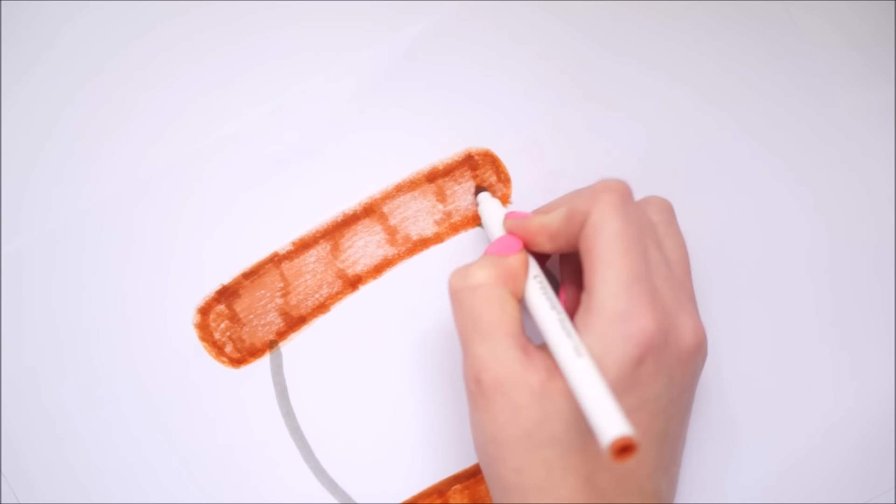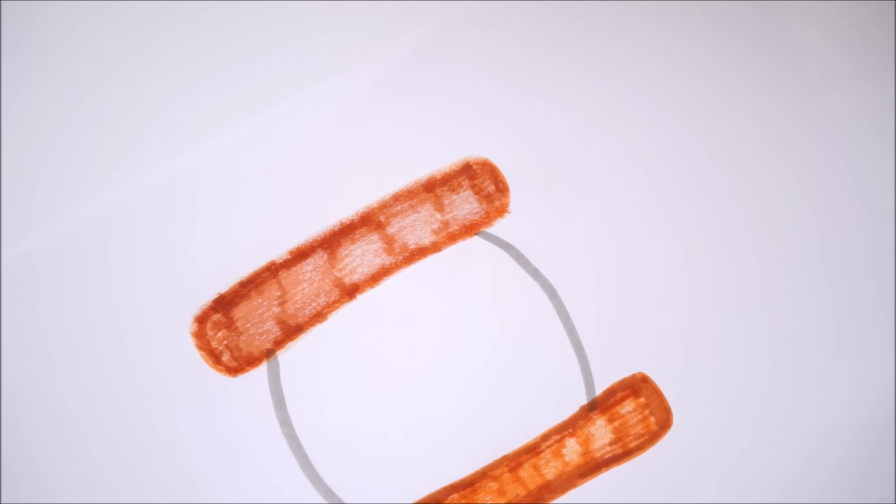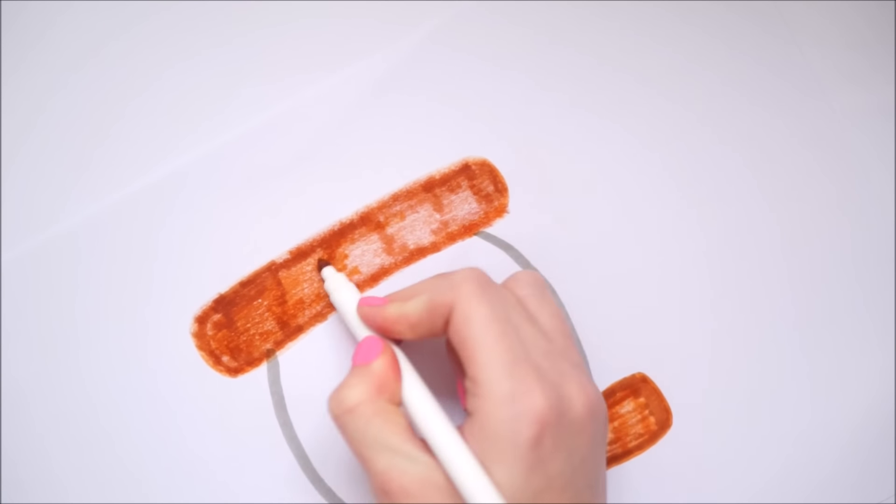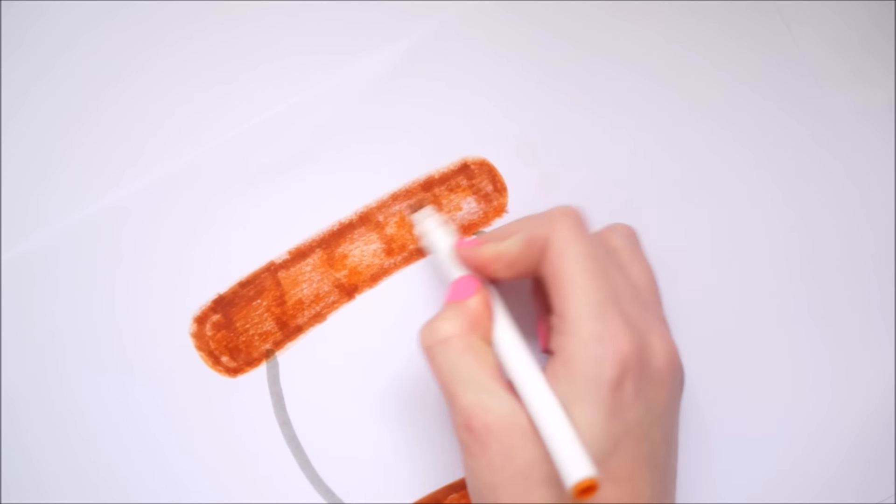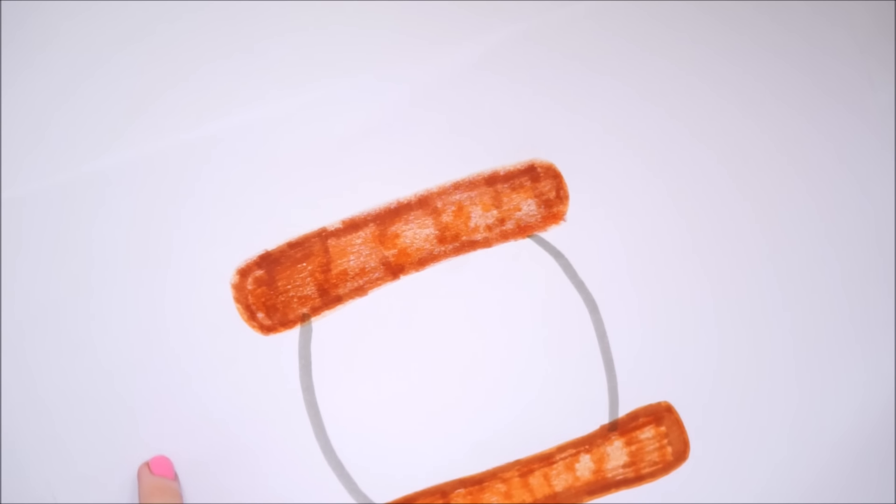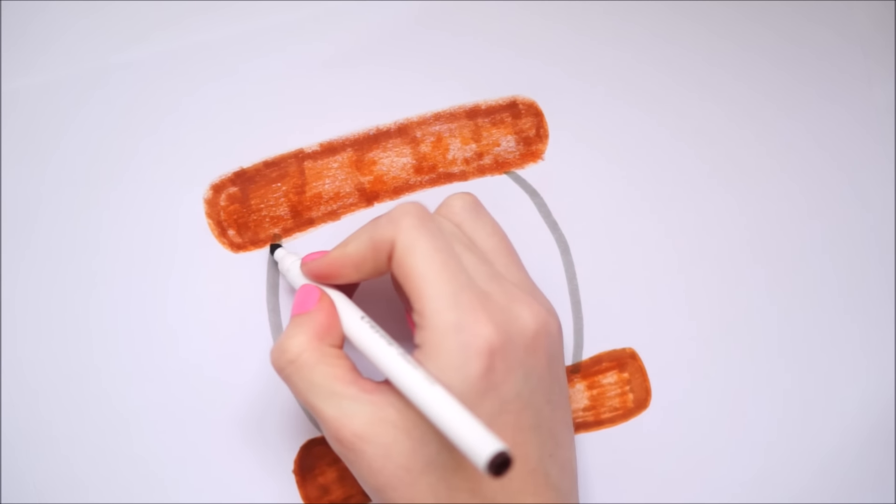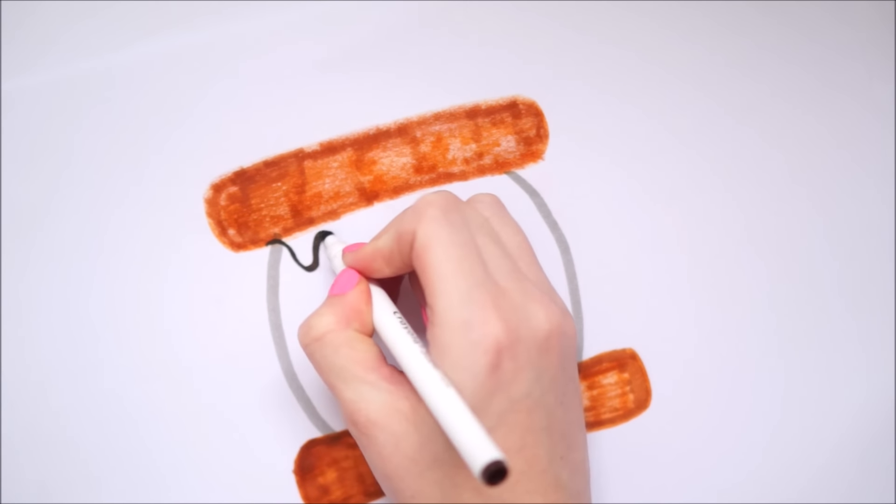Once I had all the brown bit fully colored in, I went in with another dark brown felt tip pen. This kind of looks black on camera but it was actually really dark brown. I did a dripping chocolate kind of effect so it looked like the chocolate from the s'mores had melted. I basically just drew out the rough droppy type effect and then colored it in with this pen.